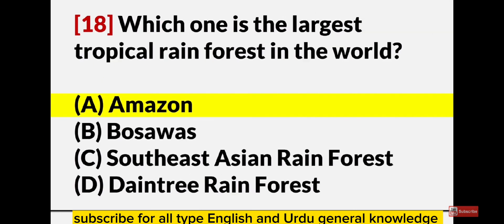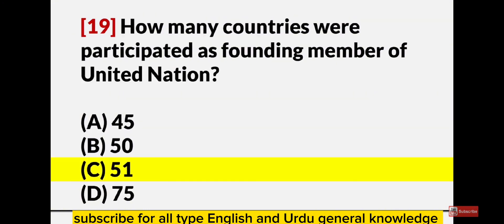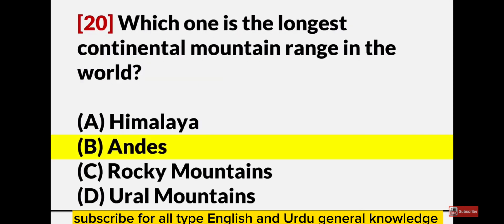Which one is the largest tropical rainforest in the world? Amazon. How many countries were the founding members of the United Nations? 51. Which one is the longest continental mountain range in the world? Indus.